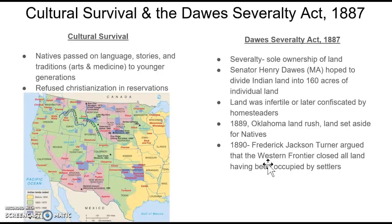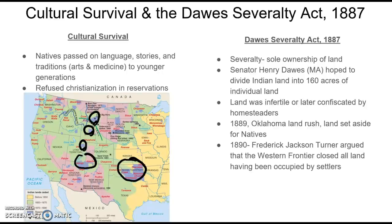Now that Native Americans were in reservations, they tried to do everything to conserve, at minimum, their culture. This map shows us that all this land was once Native American land. Land in yellow was surrendered before 1850; land in green was surrendered between 1850 and 1870; land in pink was surrendered between 1870 and 1890. By 1890, the only land left for Native Americans was small patches shown in blue or purple. The elderly tried to pass their Native language, stories, and traditions to younger generations. A major thing they were able to conserve was their art-making abilities and their medicine.